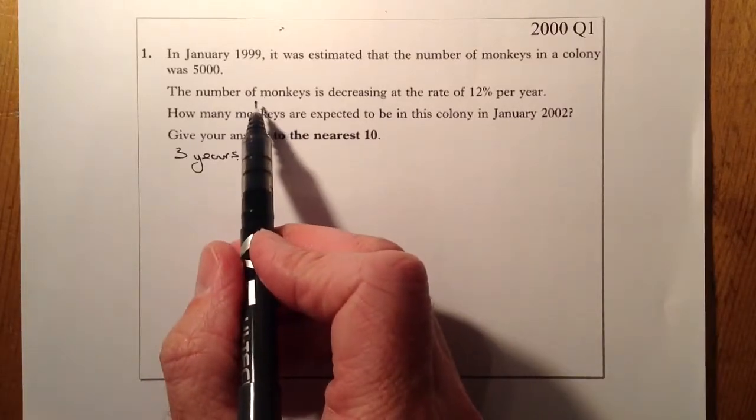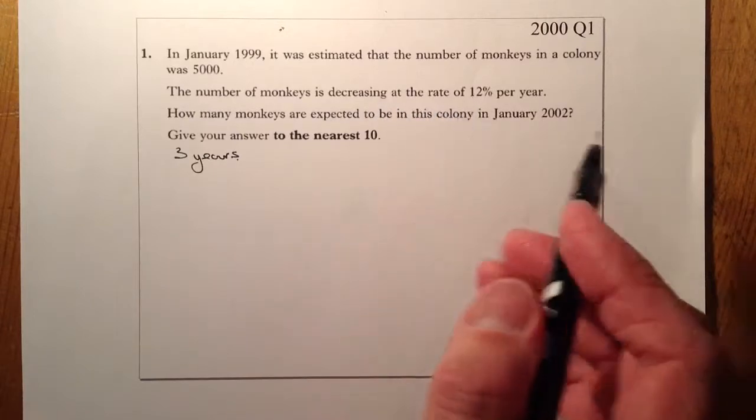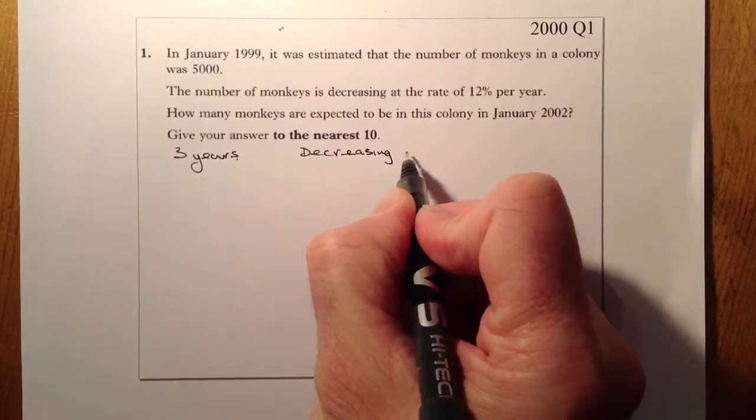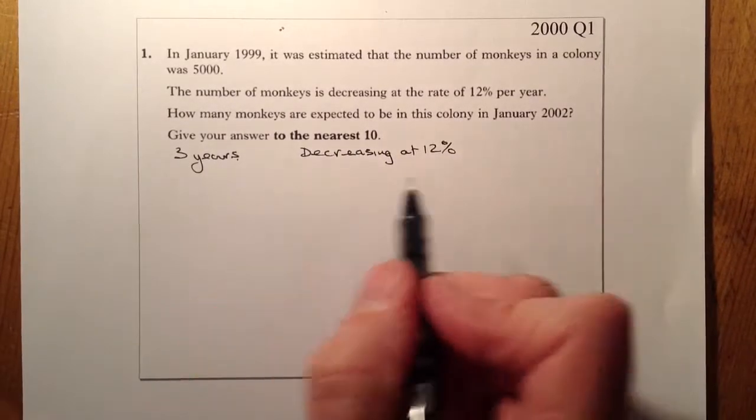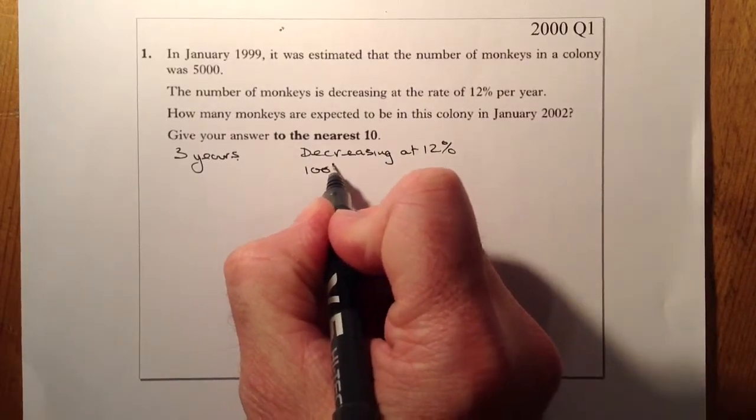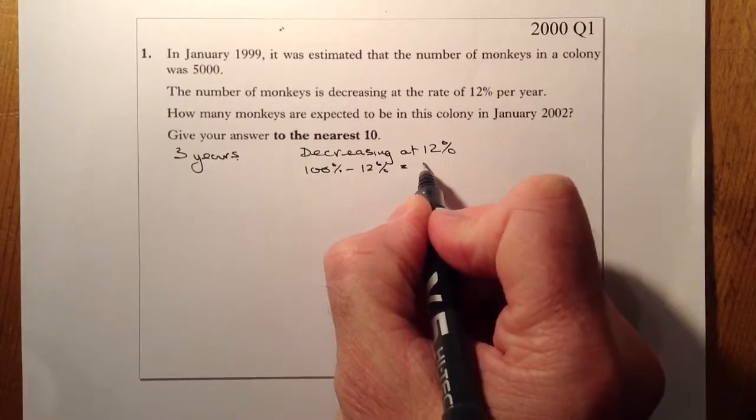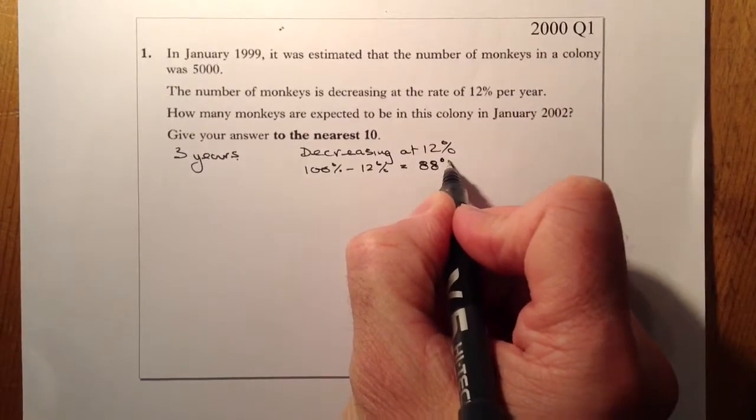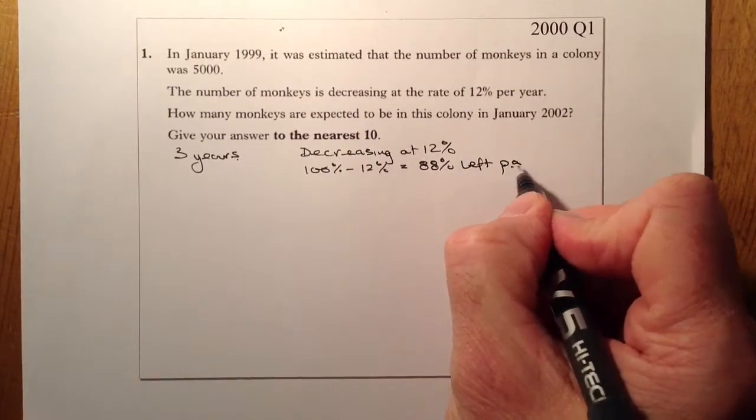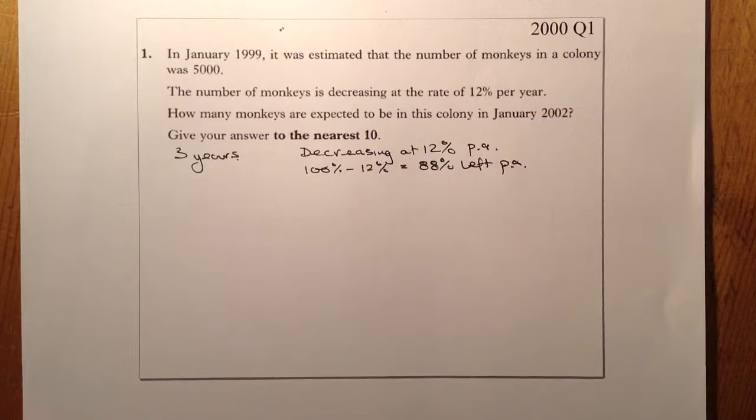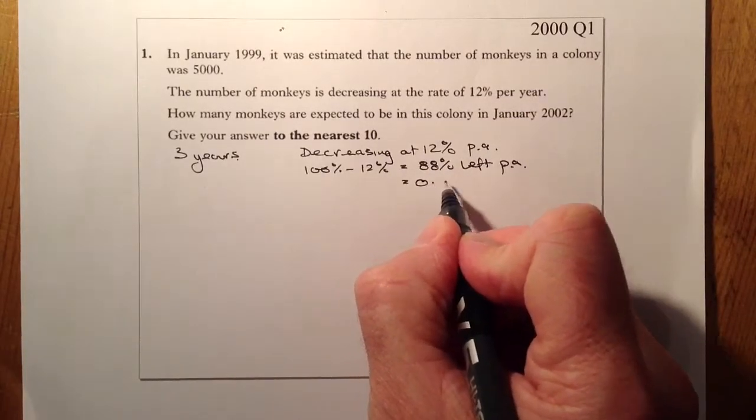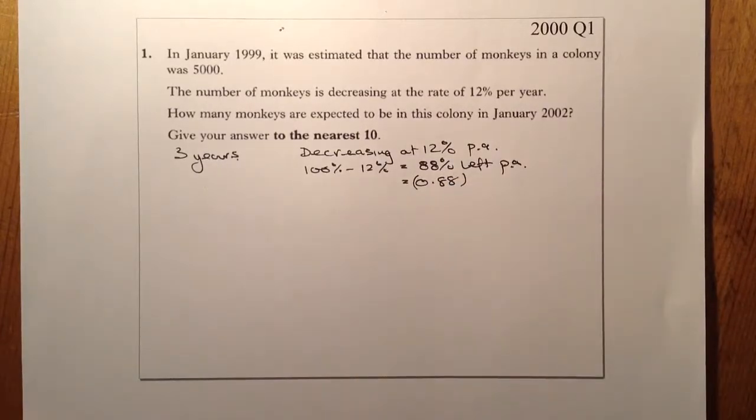So I know that the number of monkeys is decreasing at a rate of 12%. So decreasing at 12%. So when I do this type of calculation, I want to know how many are left. So it would be 100% take away 12% would give me 88% monkeys left at the end of every year. So if I've got that, I know that a decimal multiplier would be 0.88 for this one here.